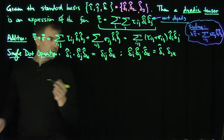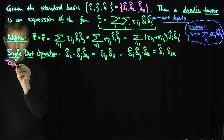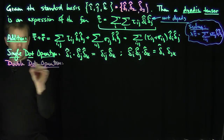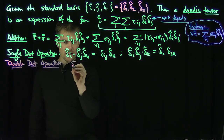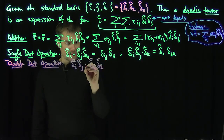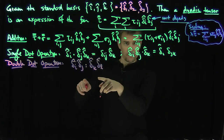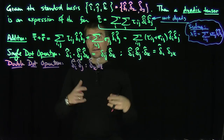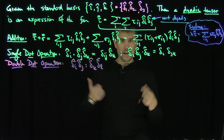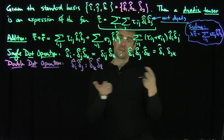I can also define a double dot operation. If I had (delta-i delta-j) double-dot (delta-k delta-l), that's a double dot operation. For those who have seen mechanics or fluid mechanics, this operator comes up a lot in the Navier-Stokes equations or the Euler equations, when doing the gradient formulation of the velocity term, which is in the form of a dyadic tensor.